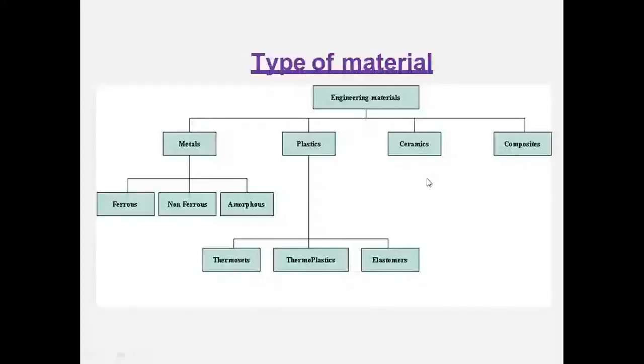We're going to see the types of materials. Engineering materials are classified into four types: metal, plastic, ceramics, and composite. In metals, you will have a classification of ferrous, non-ferrous, and amorphous. Plastics will have classifications of thermoset, thermoplastic, and elastomer.